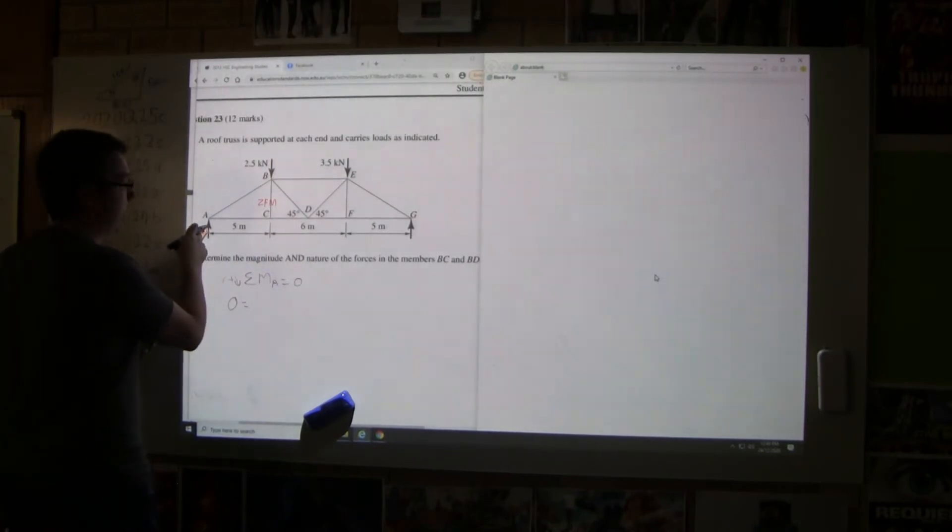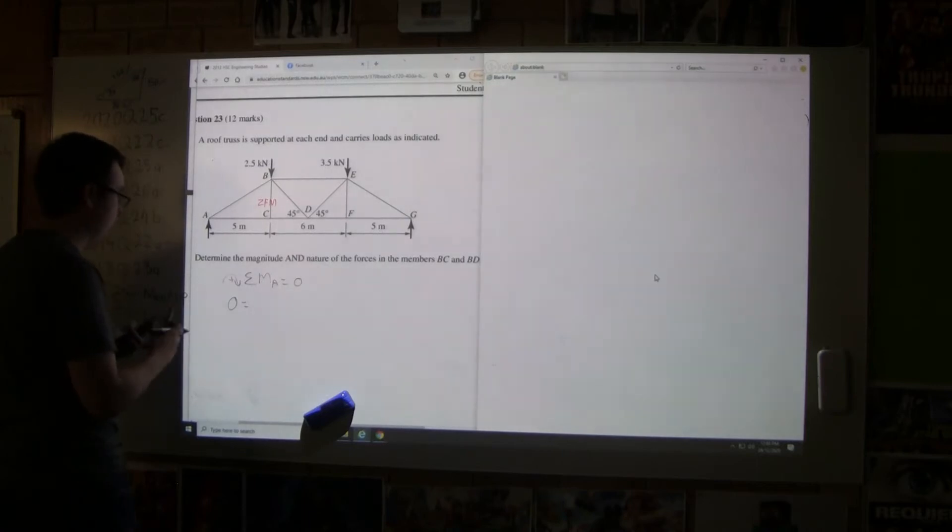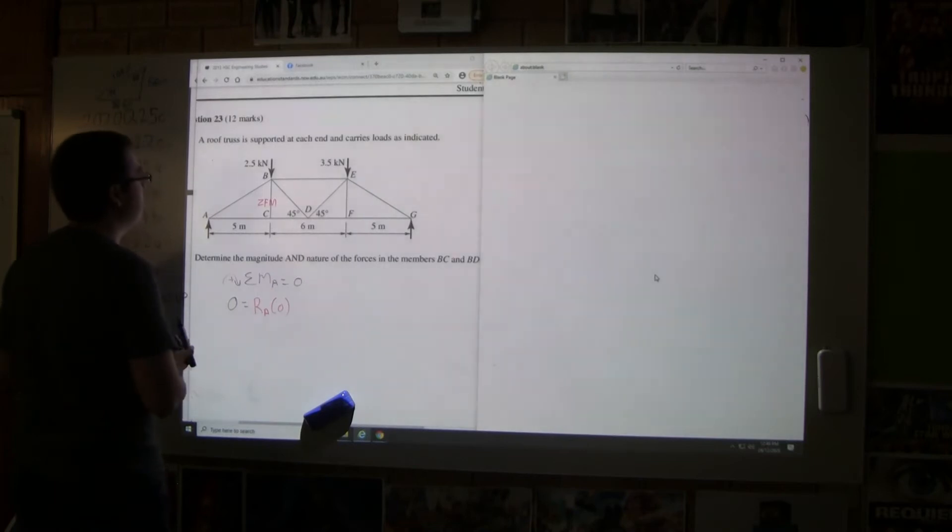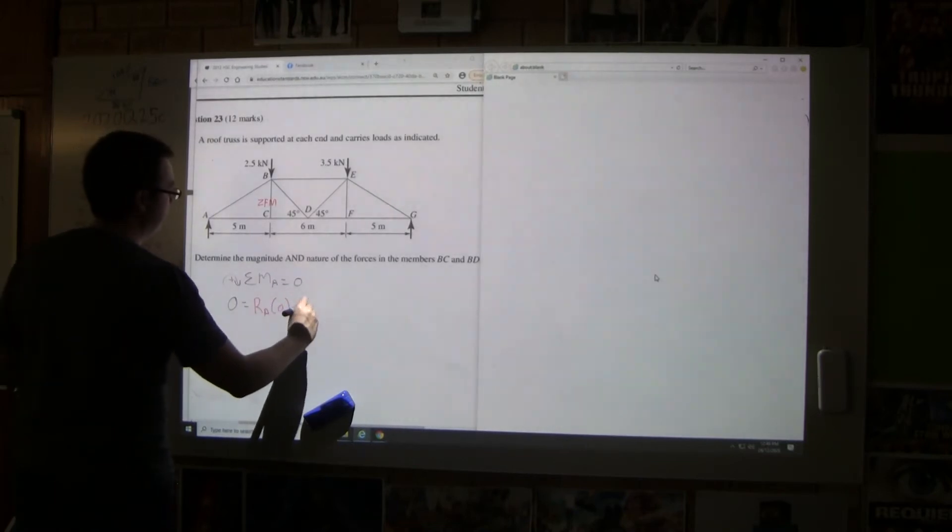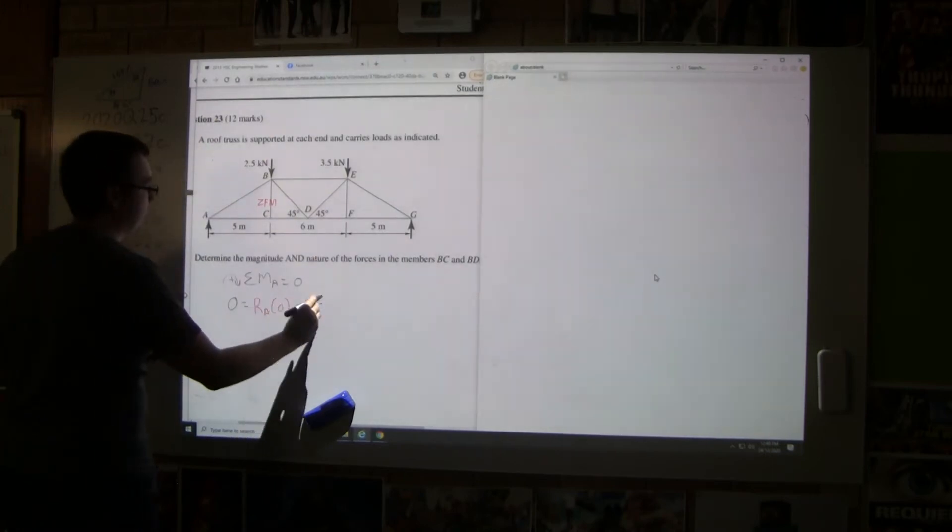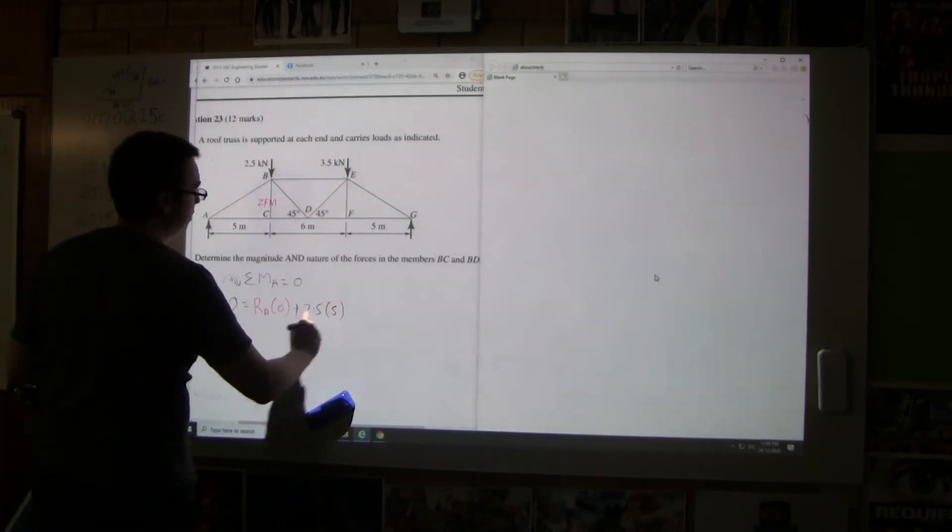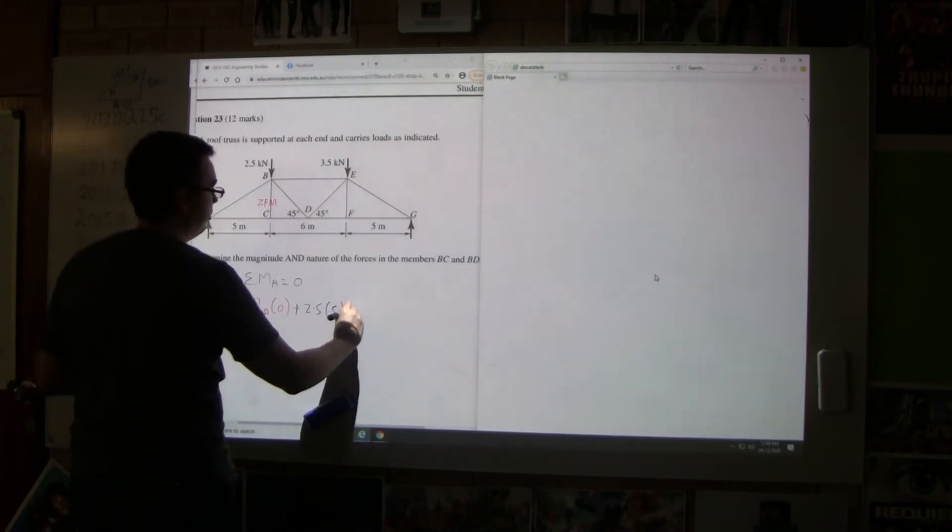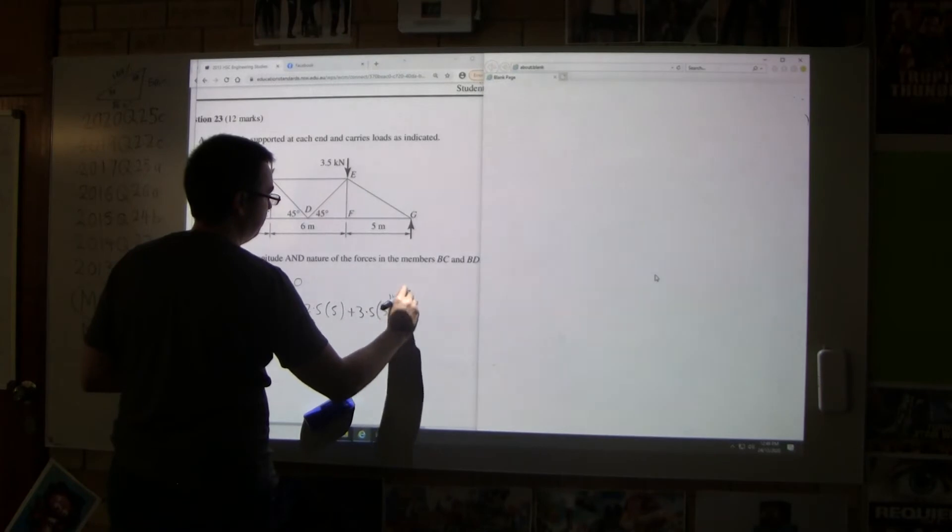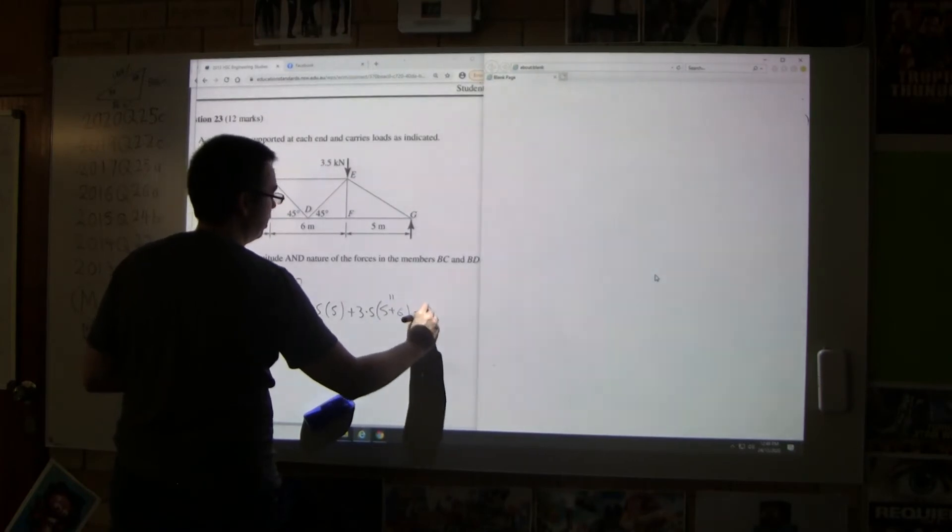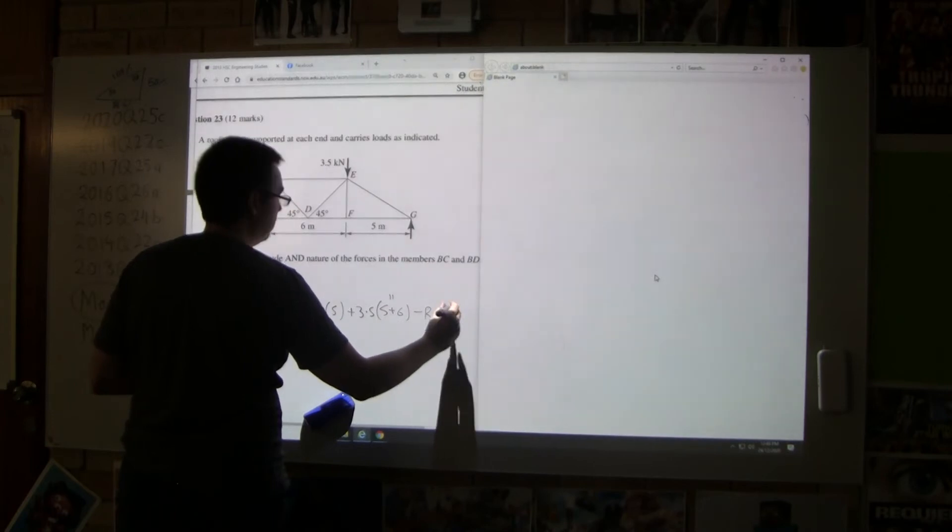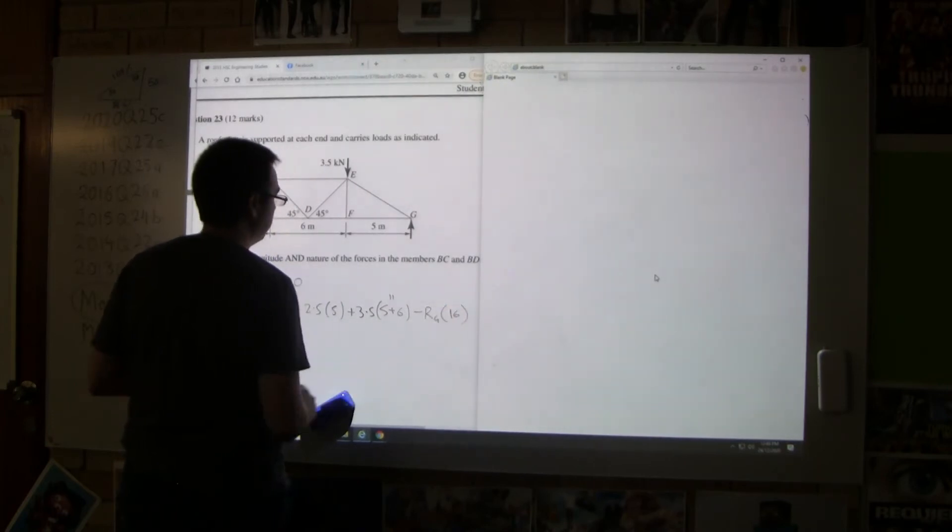We've got A times zero. And then we've got 2.5. Is that going clockwise? It is going clockwise. And its distance is 5. The next one is 3.5 plus 3.5 brackets, 5 plus 6 is 11. And then finally we have RG. RG is 16. I'm not going to do the maths for that one.